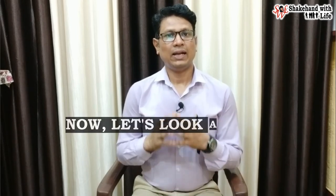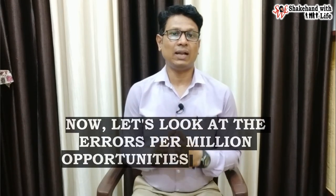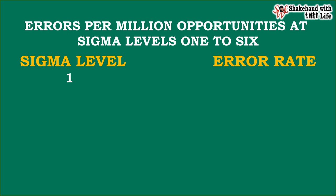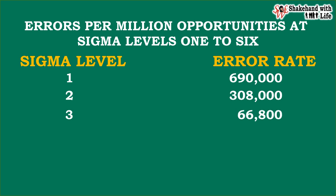Now, let's look at the errors per million opportunities at sigma levels 1 to 6. At 1 sigma level, the error rate is 690,000 per million opportunities. At sigma level 2, the error rate is 308,000. At sigma level 3, the error rate is 66,800. At sigma level 4, the error rate is 6,200. At 5 sigma, the error rate is 233, and at 6 sigma, the error rate is 3.4 per million opportunities.